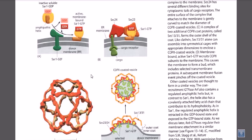Then COPII vesicles take on their job and finally the protein is destined to its particular destination point. The basic idea in this case remains the same: we have a cargo protein and we need a cargo receptor. The receptor will have two different attachment sites — one for the target protein or cargo protein, which is present inside the endoplasmic reticulum lumen.